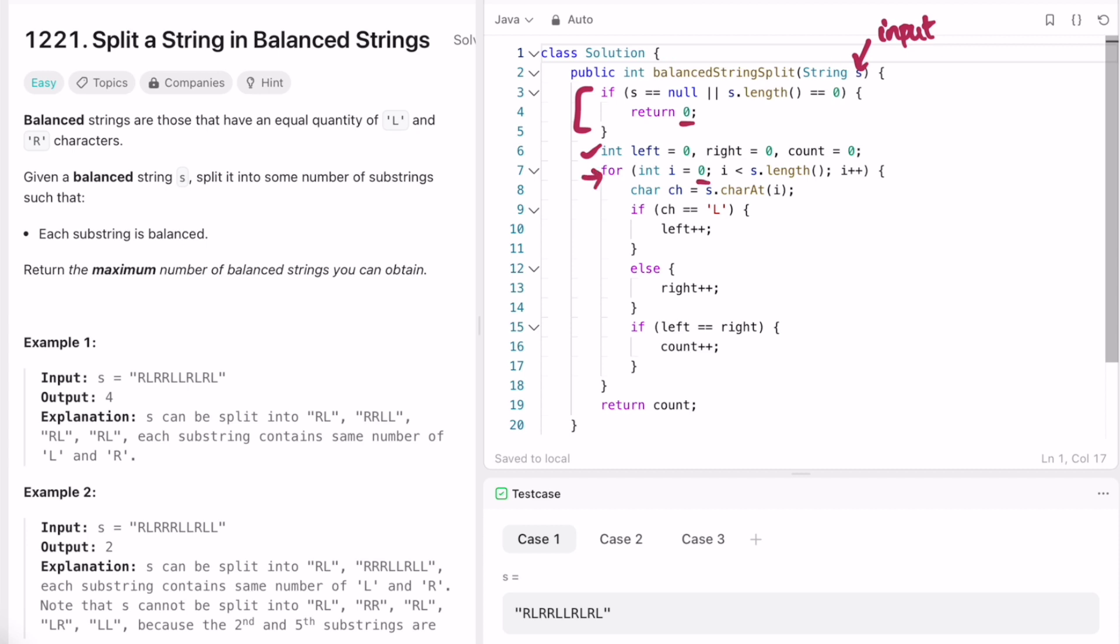And now we start our for loop which will start from zero until the end of the string. And now we access each character ch at a time so that we can check if it is an L or an R. So here we are checking if it is a left character, so we are incrementing left. We are checking here if it is a right character, so we are incrementing right.